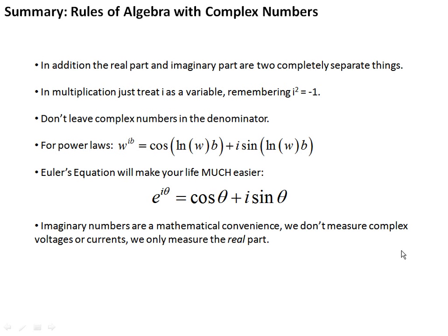Don't leave complex numbers in the denominator because you can't separate into real parts and imaginary parts. For power laws, you have this equation. Write it down somewhere and look it up if you need it. Euler's equation is going to make your life much easier. You need to remember this one and know what it is because you're going to use it a lot. Also remember that imaginary numbers are mathematical convenience. We don't actually measure complex voltages or currents. We only measure the real part. So even though we use imaginary numbers to solve equations, the imaginary part is just a mathematical convenience, but it's a really good one.